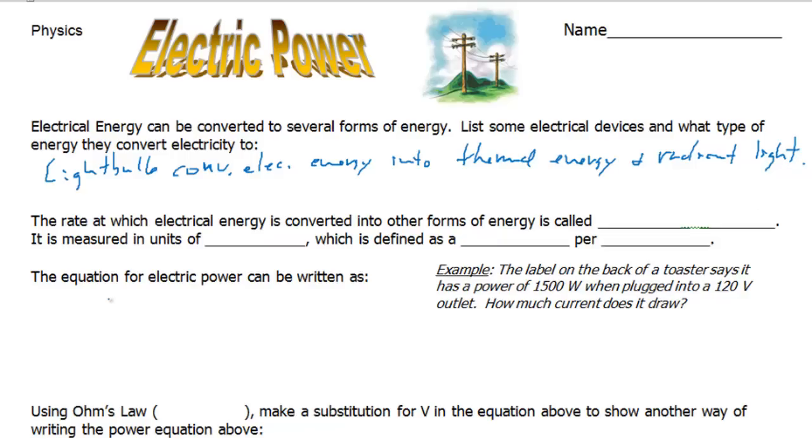So, the rate at which the electrical energy is converted into these other forms of energy is called electric power. Electric power is measured in units of, and if you know the answer, go ahead and work ahead of me and then come back to check your answer.